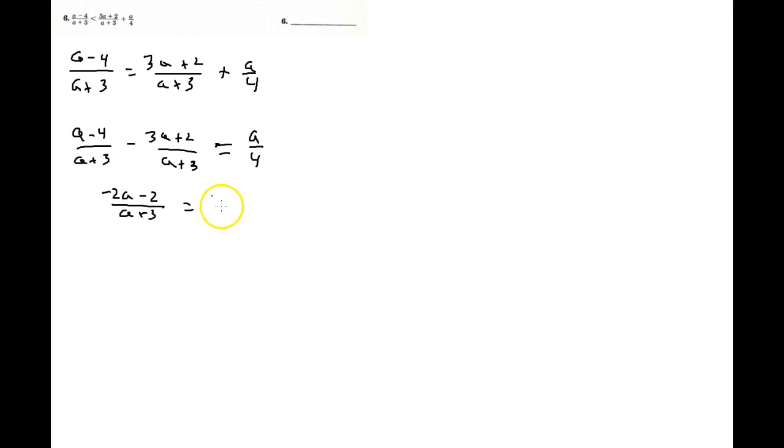So now I've got a situation where I can just do cross multiplication, right? So I've got negative 8a minus 8 equals a squared plus 3a, and that's my cross multiplication stuff. And I take a look at it and go, well, all right, I've got a squared and not a squared, so I've got a quadratic. I've got to set it equal to 0 then.